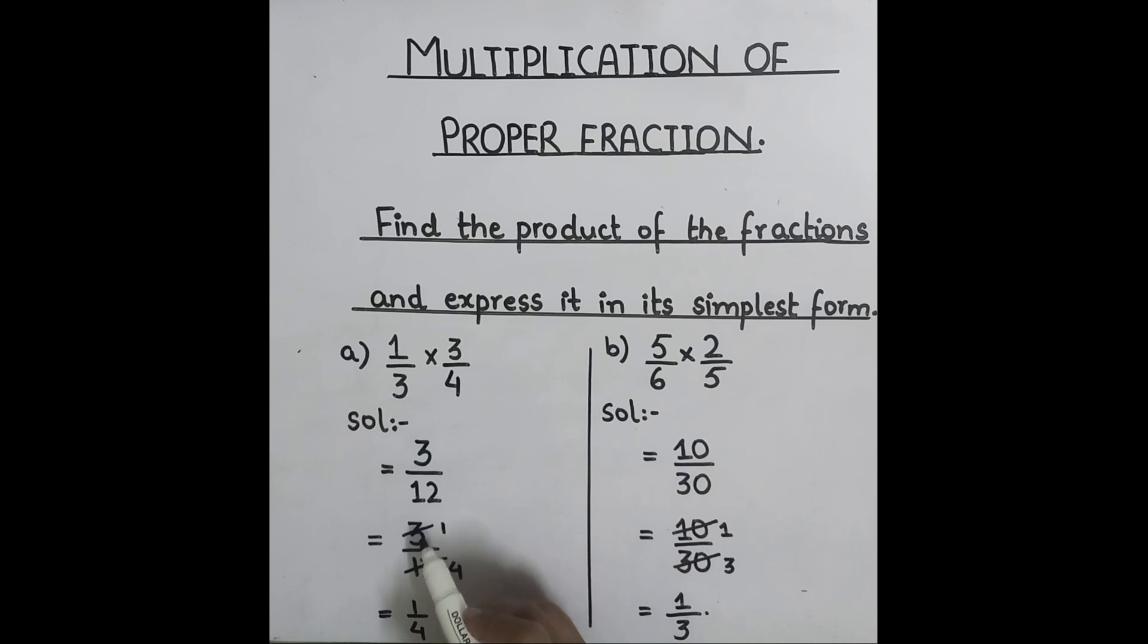If you have chosen three to simplify this fraction, then you will cut the numerator and denominator both on the table of three. Three one times three, three four times twelve. So, one over four is the simplified answer.